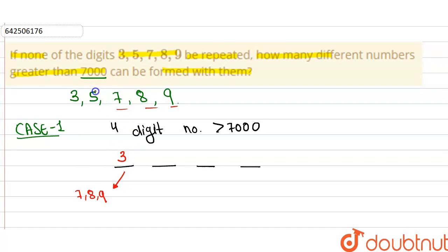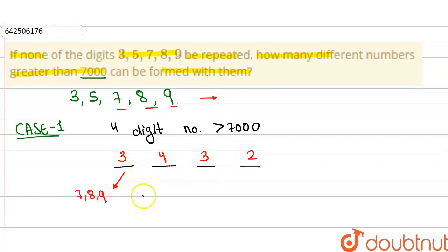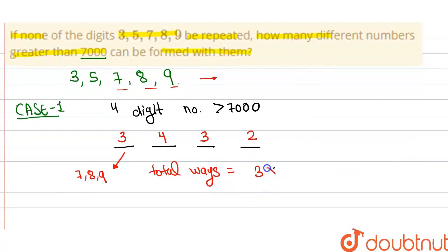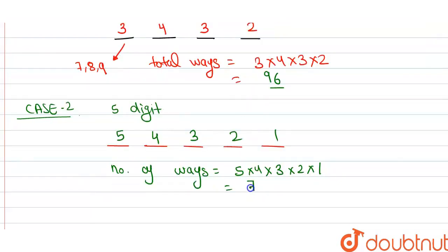If one number is already used at the first position, then we have 4 numbers left. At the second position, we can use 4 numbers; at the third position, 3 numbers; and at the fourth position, 2 numbers. So the total numbers that can be formed that are greater than 7000 equals 3 × 4 × 3 × 2 = 72.